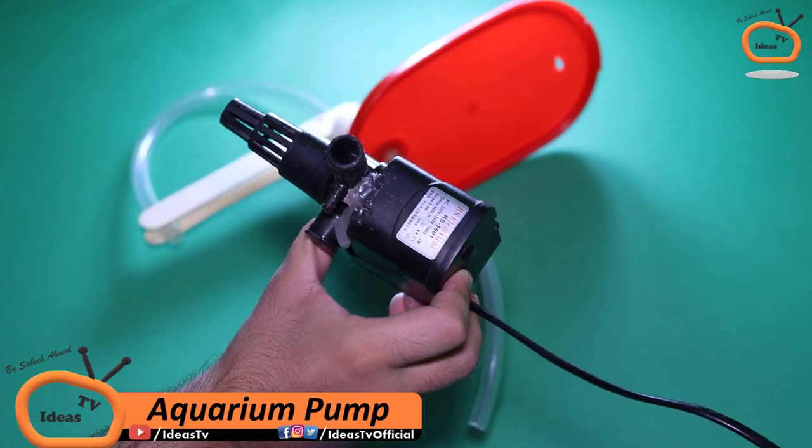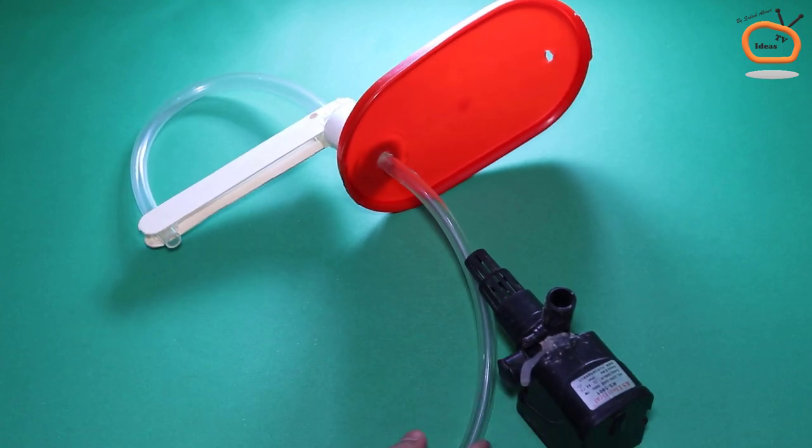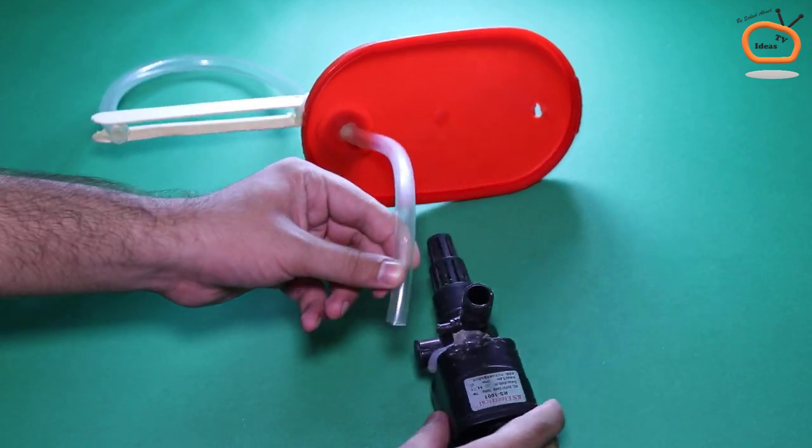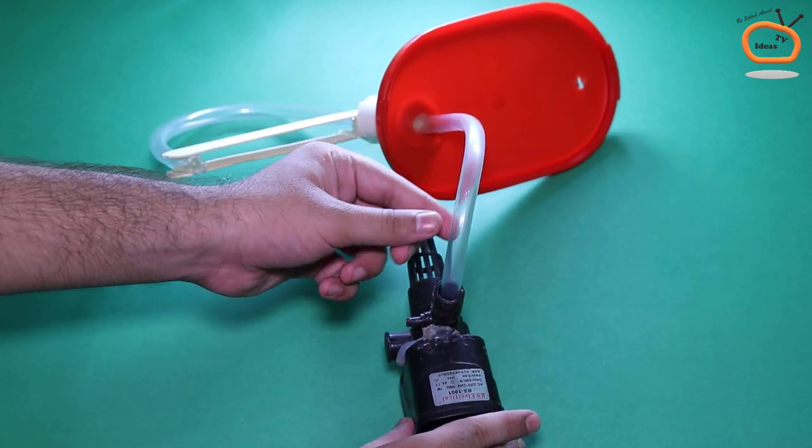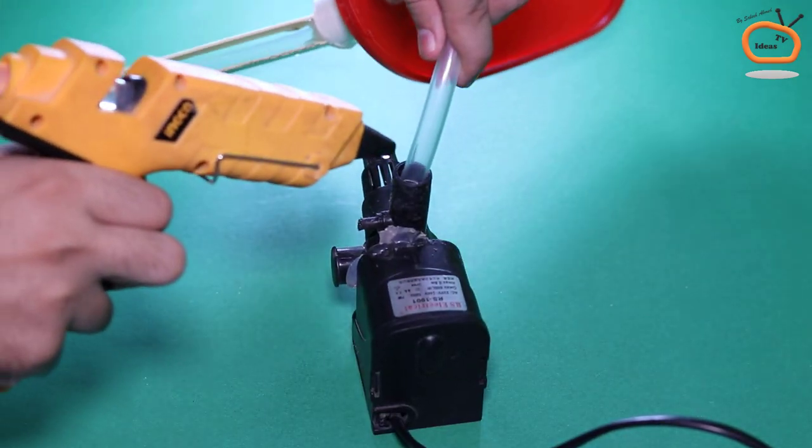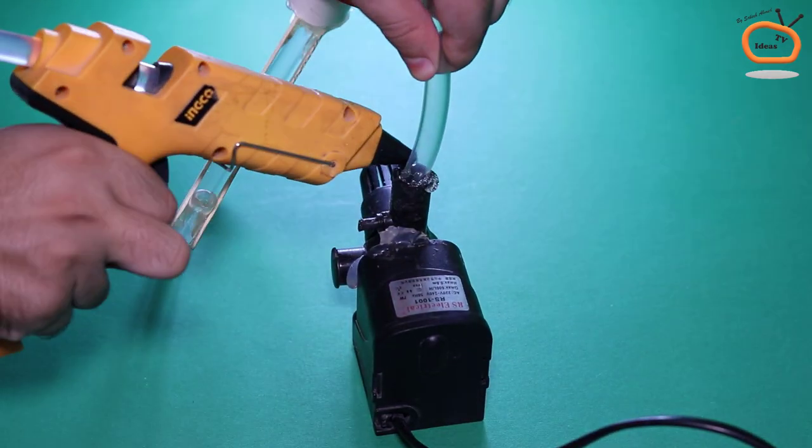Here I am using a 220V AC aquarium pump. Connect the rubber pipe with the pump and seal it with hot glue.